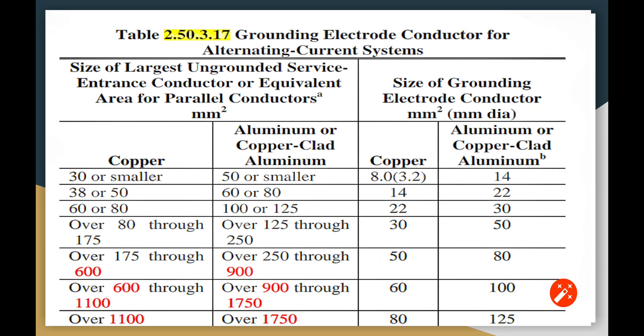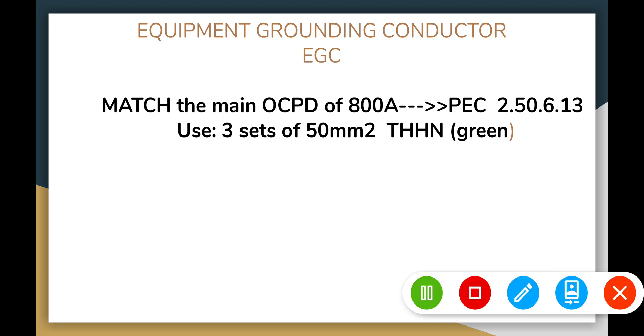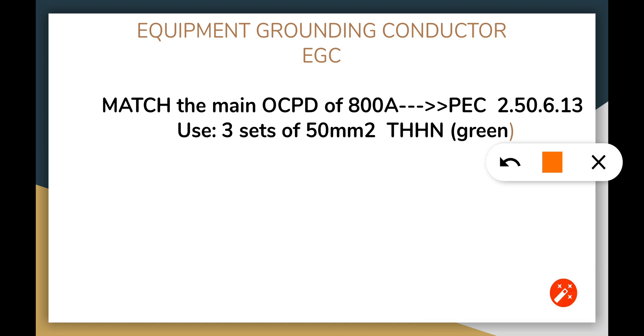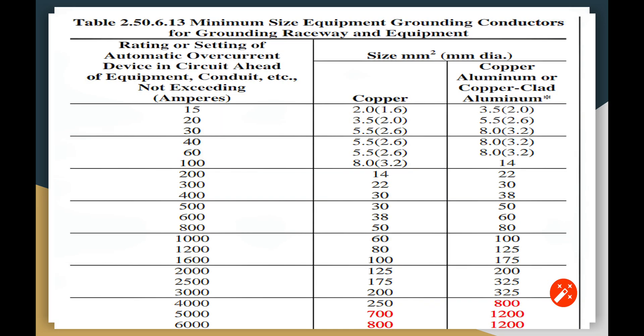The equipment grounding conductor matches the main OCPD of 800 amperes. Then we go to PEC 2.50.6.13. Here's three sets of 50 mm squared. These are the three that are together with the rerouting of our grounded wires and the neutral and our equipment. If we have 800 here, we get 50 mm squared, so we're code compliant at 50 mm squared minimum for our parallel conductors.